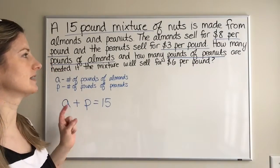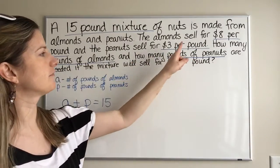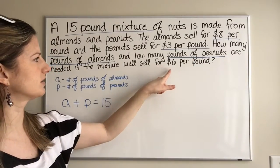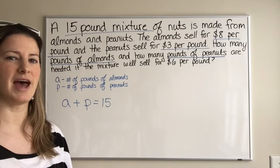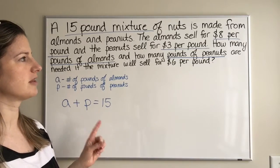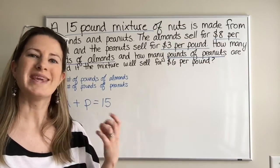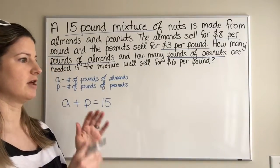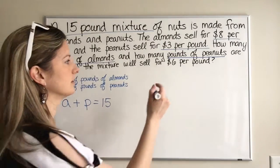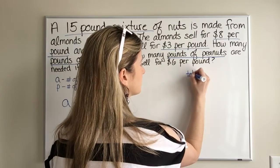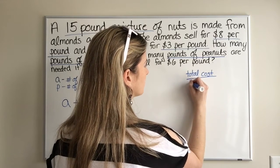Now this is where it gets a little more difficult. Almonds sell for $8 per pound, peanuts sell for $3 per pound, and we want the mixture to sell for $6 per pound. So how do we calculate price per pound? We calculate price per pound by finding the total cost and dividing it by the number of pounds.